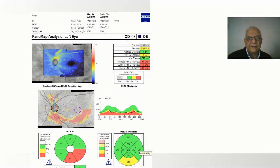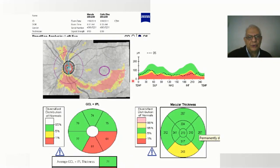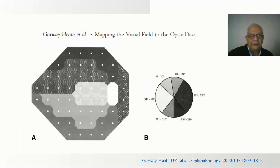That is why a combined printout in the Zeiss machine shows the ganglion cells in the macula together with the inner fiber layer around the disc. When they correspond, we are sure of the diagnosis. To compare OCT with the visual field, back in 2000, Garway-Heath and his group traced visible nerve fiber bundles from the optic nerve head to points of the 24-degree visual field pattern, proposing the relationship between each part of the field and the corresponding part of the optic nerve.